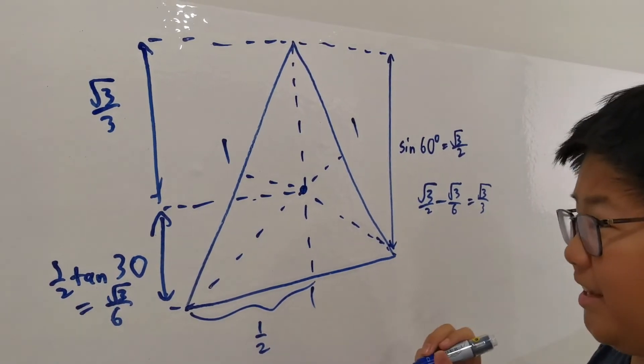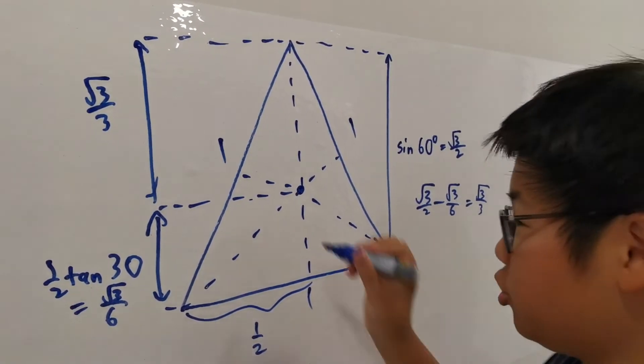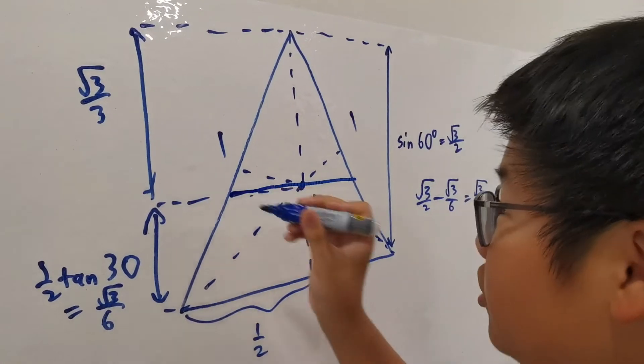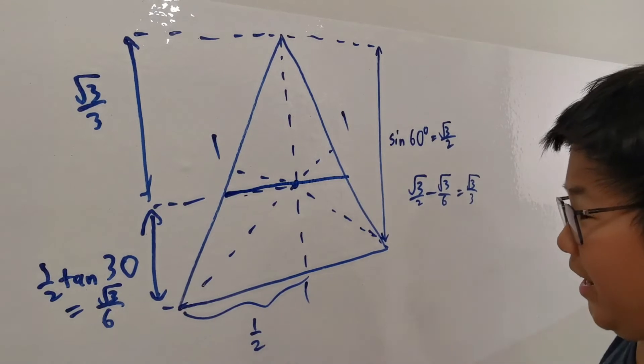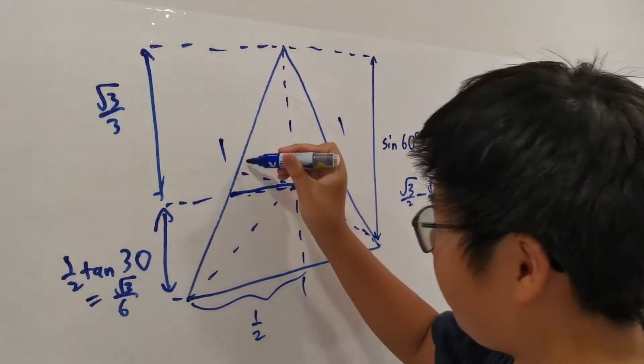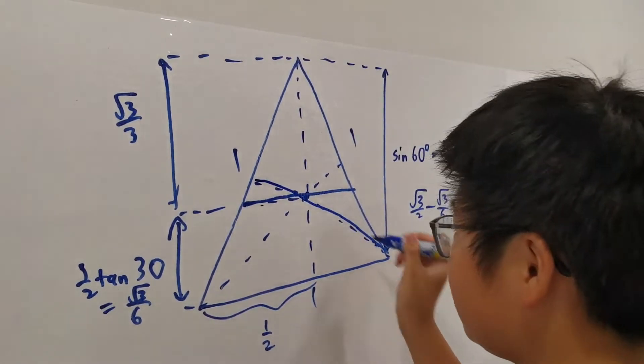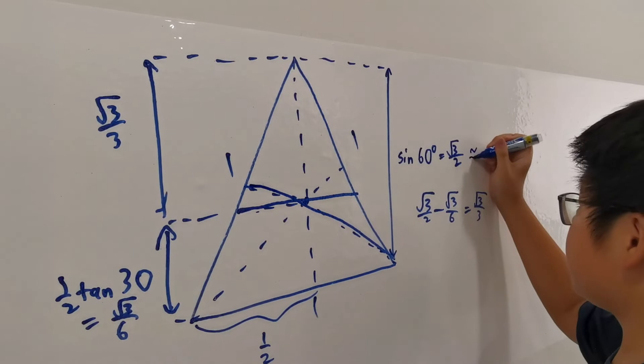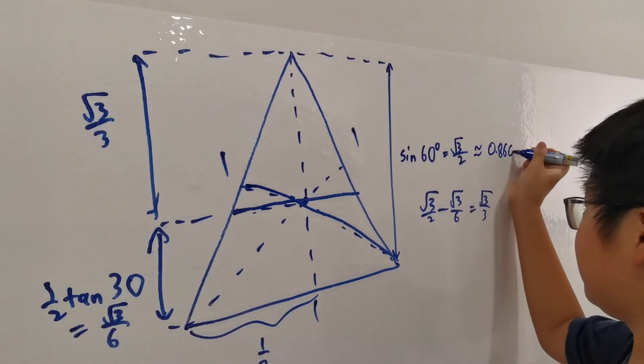The question says that we need to draw a line through the centre, and we need to find the minimum length of the line which crosses two sides. Of course, the first instinct is to draw this diagonal, which we have seen as a height of root 3 over 2, which is approximately 0.866.